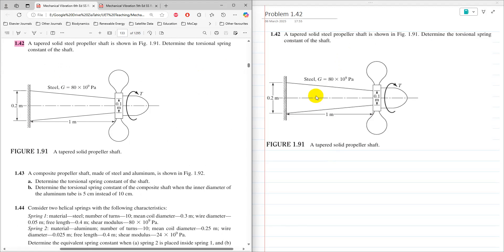So this is a tapered shaft, and the length of the tapered shaft is 1 meter. Modulus of rigidity is 80 gigapascal, and at one end its diameter is 0.2, and at the other end its diameter is 0.1, and is subjected to a twisting moment T.